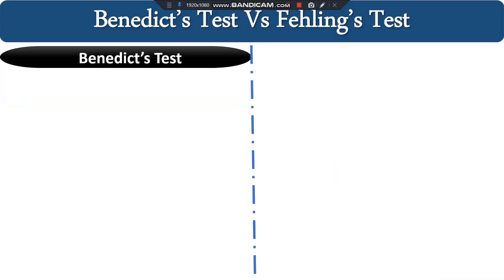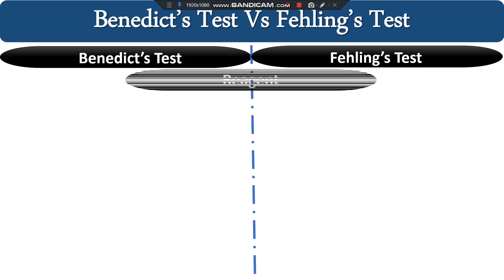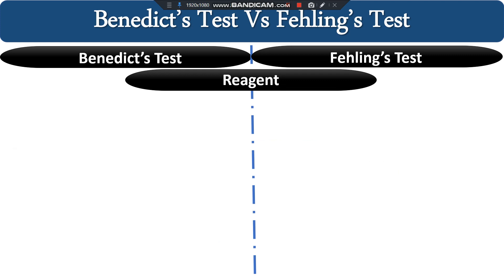The Benedict test and Fehling test are the two tests by which we normally distinguish between reducing sugar and non-reducing sugar, alcohol and ketone, alpha-hydroxy ketone, and some other carbohydrates. Let me explain the different distinctions and how we can differentiate.